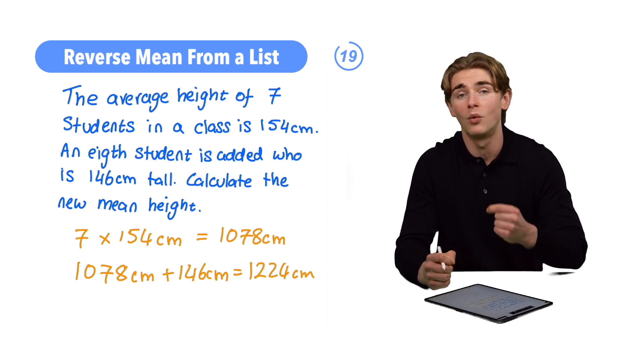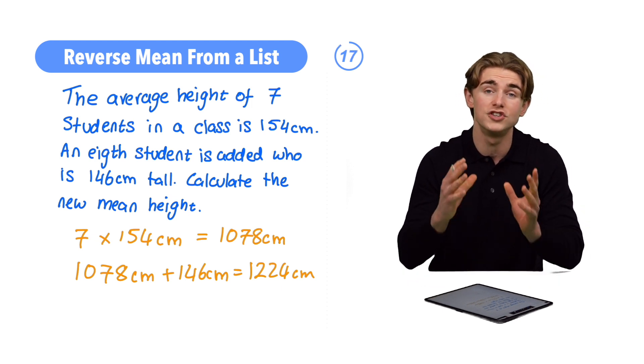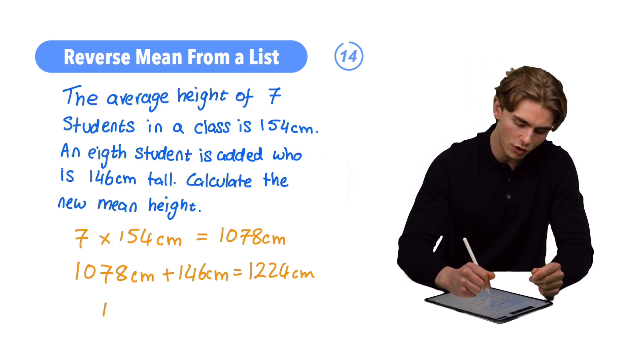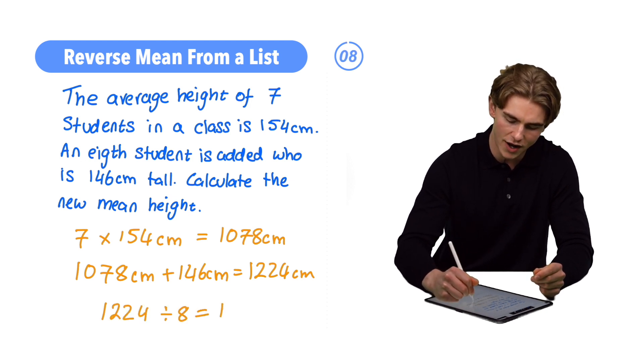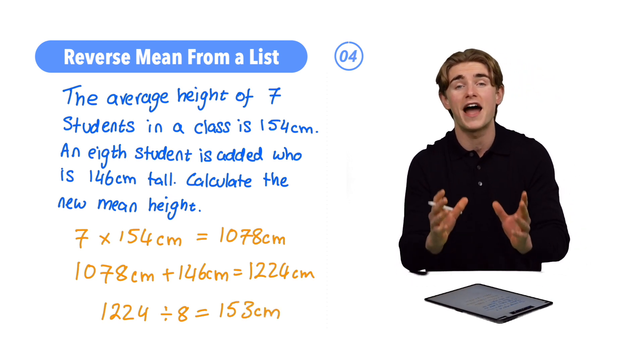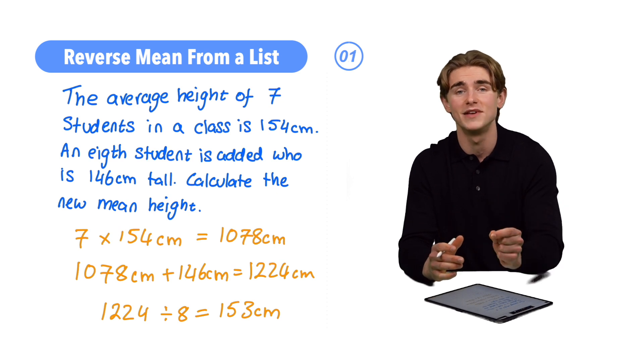Now, we can do our 1224, the new total height, divided by eight, which is going to be the new total number of students. So, we're going to have 1224 divided by eight, and that's going to be 153 centimeters. That, guys, is going to be our new average height, 153 centimeters.